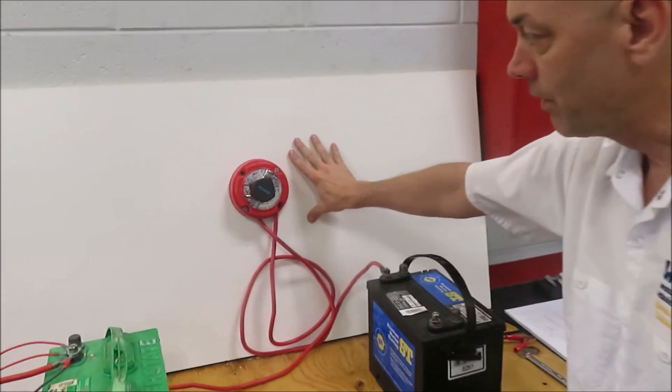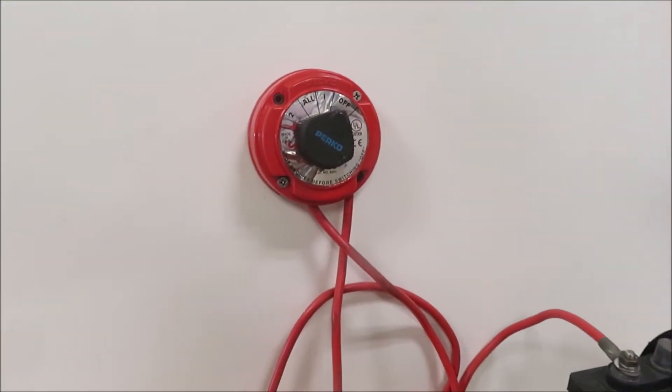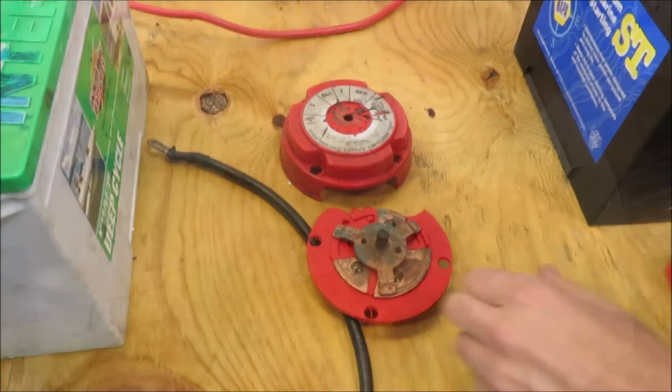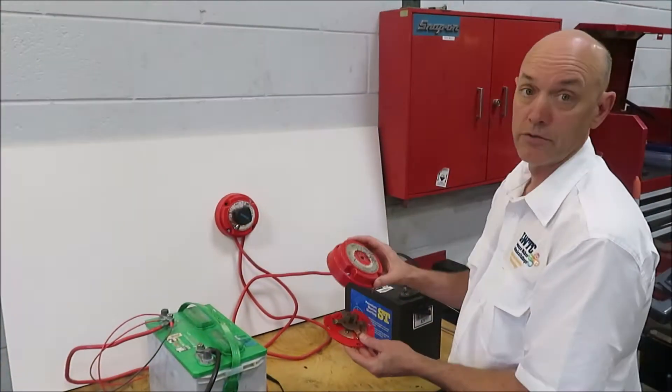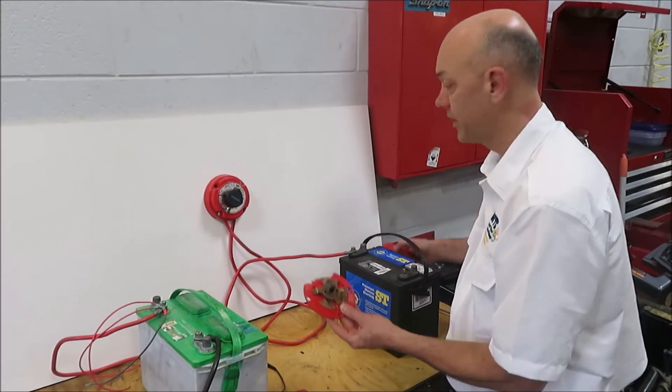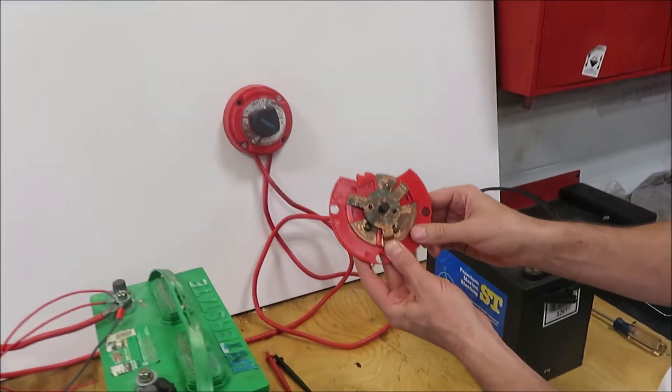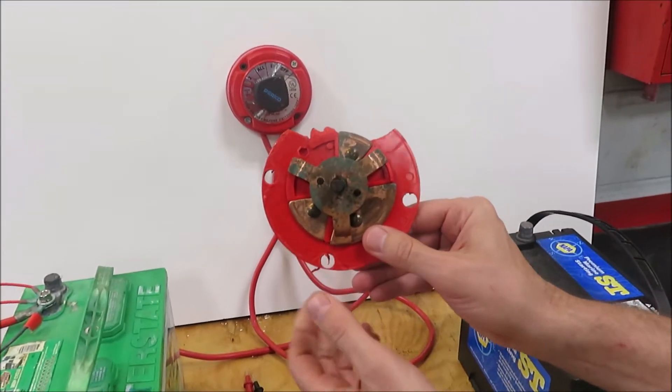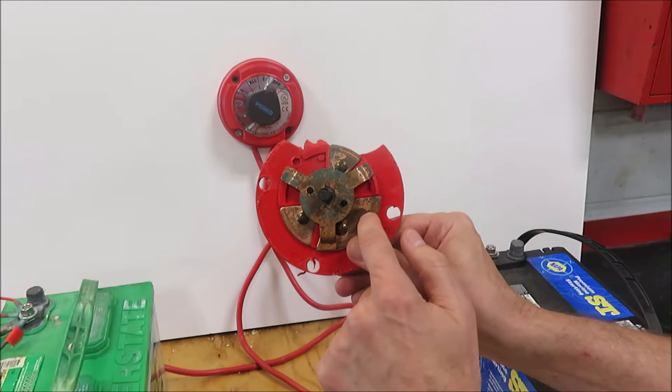So we've got one mounted here, we've also got one disassembled. We took apart a battery selector switch that had some water in it to see what actually makes this thing work, and you can see here that you've got plates.